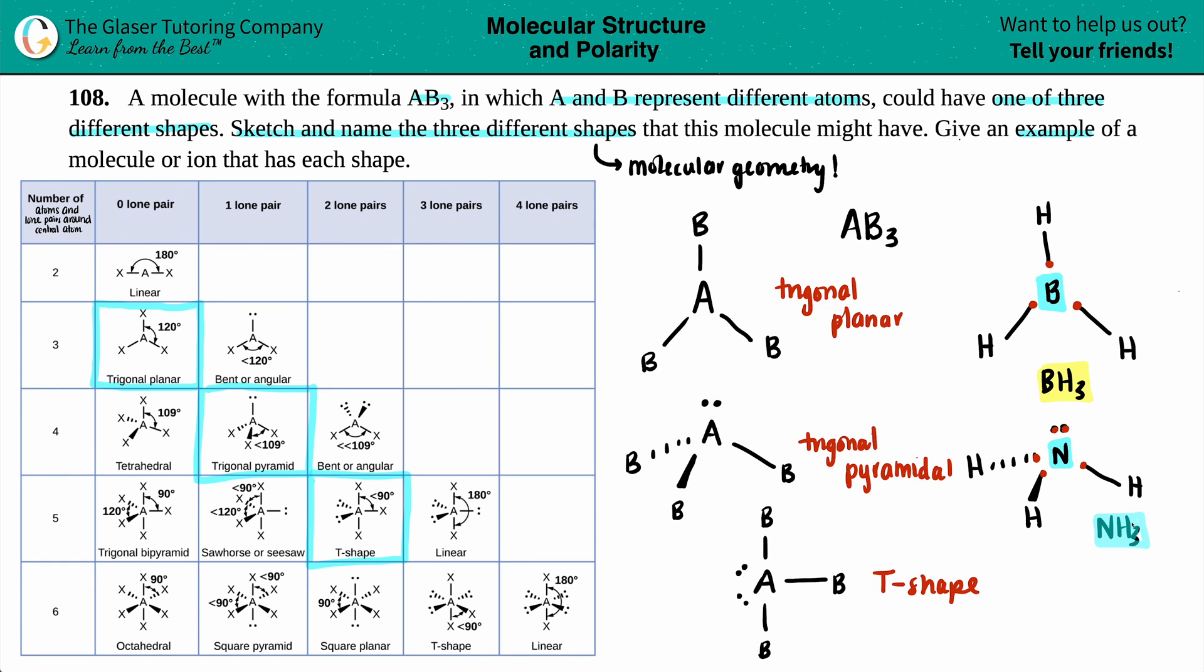Then we just got to do the last one. So we do the same exact idea here. What element in the middle could have the three bonds and the two lone pairs? We'll see how many valence electrons it had. One, two, three, four, five, six, seven.